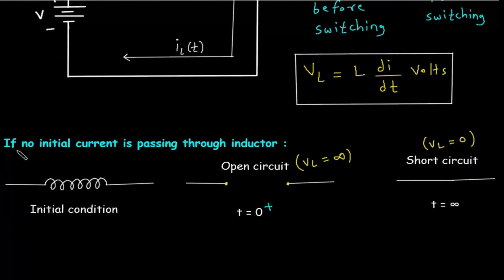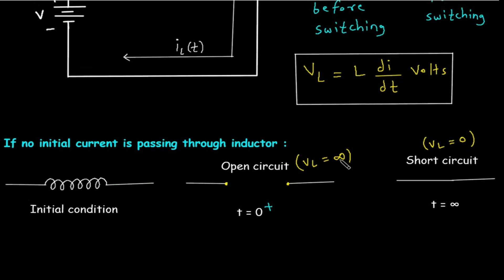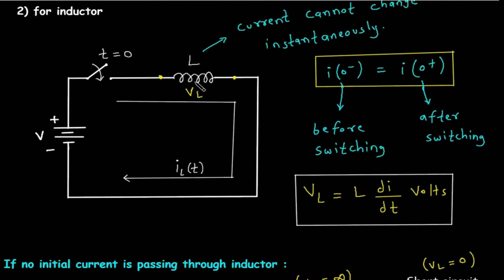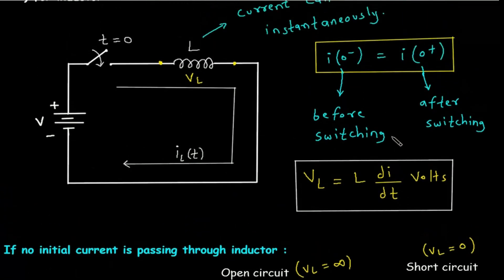If no initial current is passing through the inductor, the initial condition is zero current. At t=0⁺, when the switch is closed, the inductor acts as an open circuit because VL becomes infinite — since t=0, VL is infinite, and when VL is infinite the inductor is open-circuited.